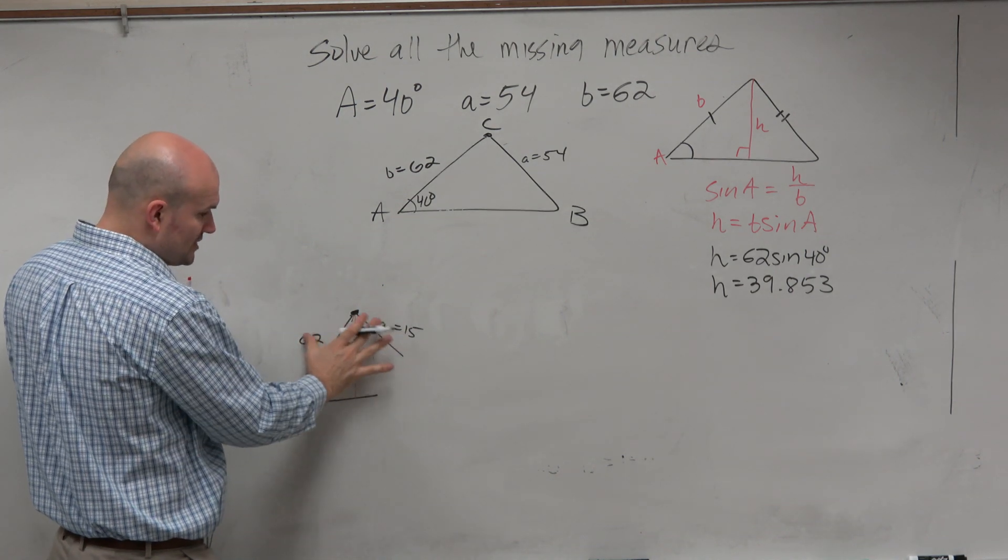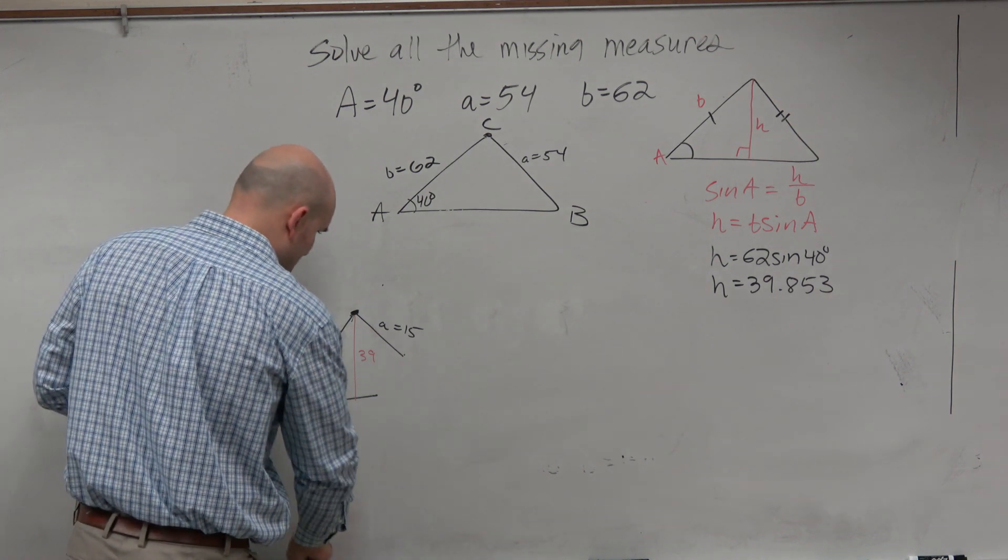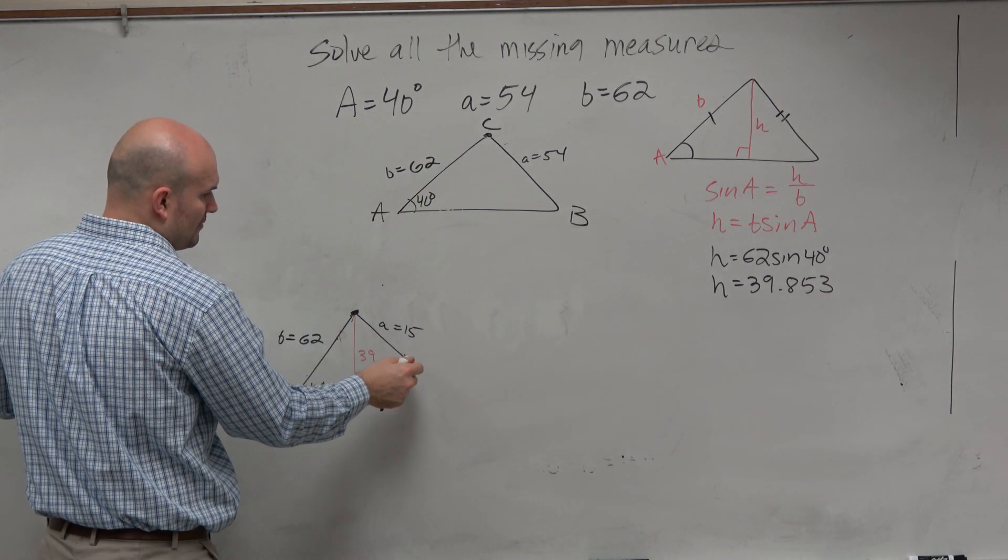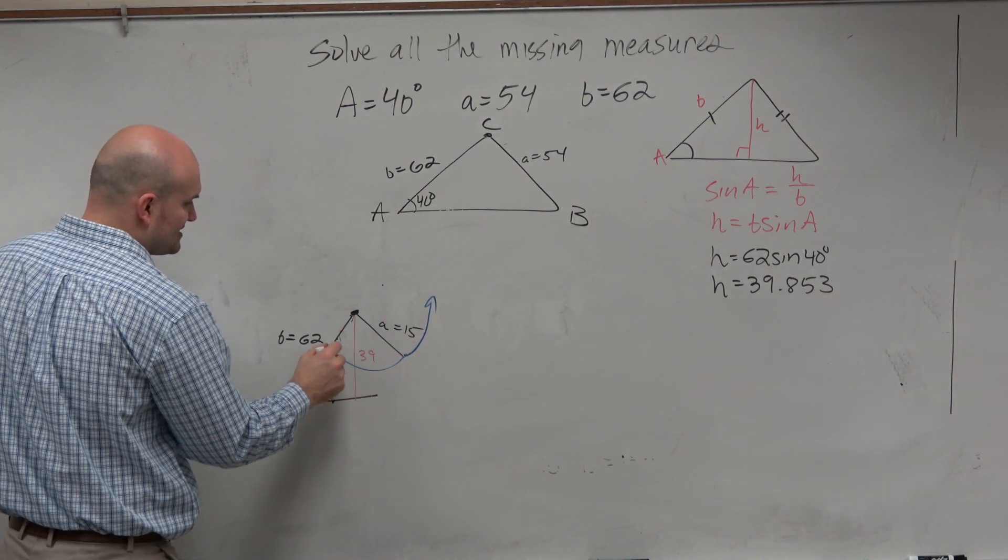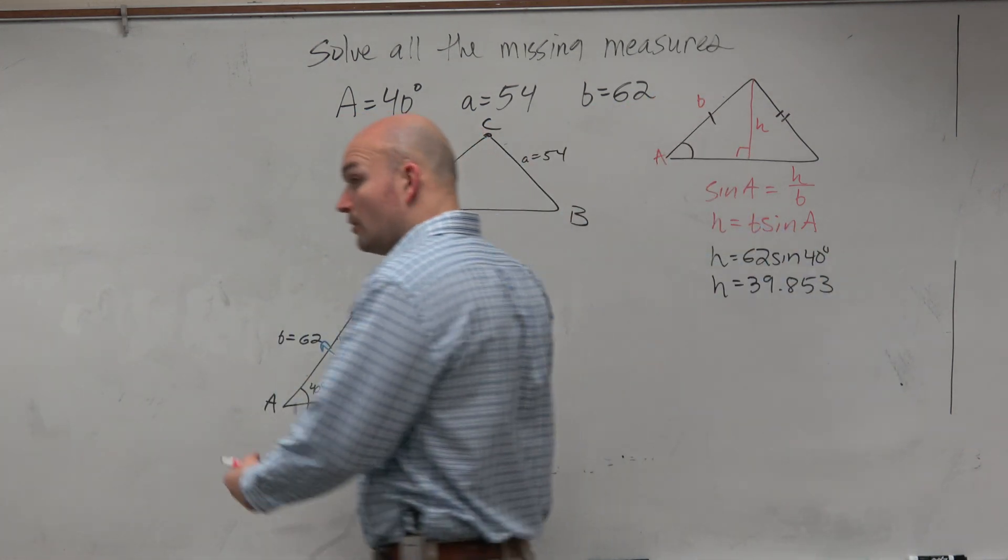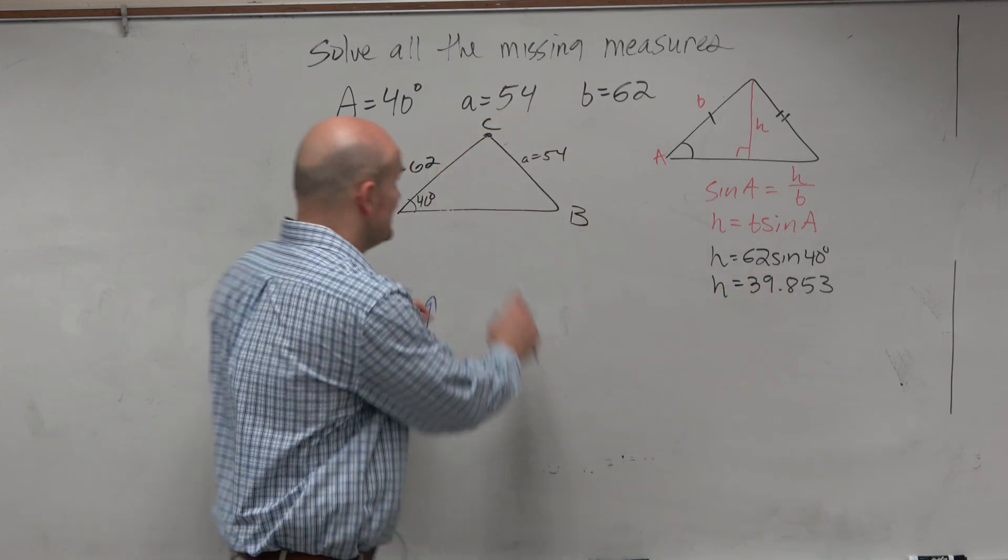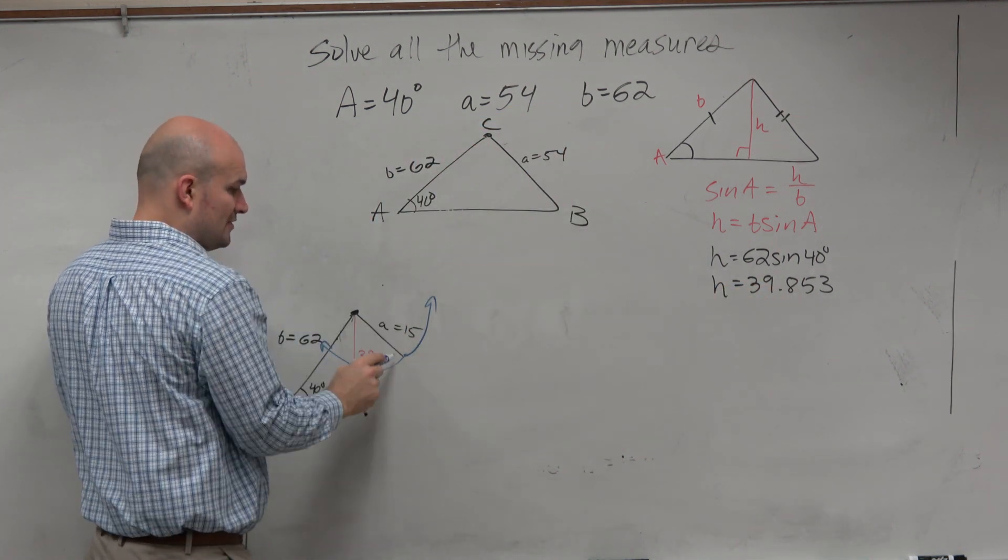This side length, we know these are all fixed. So therefore, I could basically rotate this angle any way I want to. However I rotate this side length, am I ever going to create a triangle? No. So one thing we recognize is if we find the height and we recognize the height is bigger than the opposite side, there's no triangle.